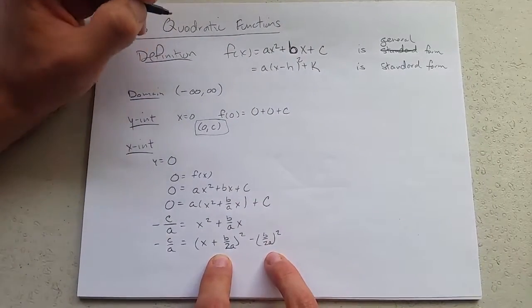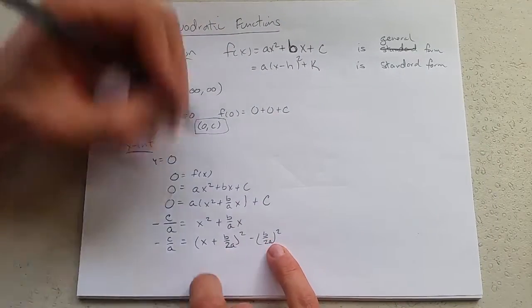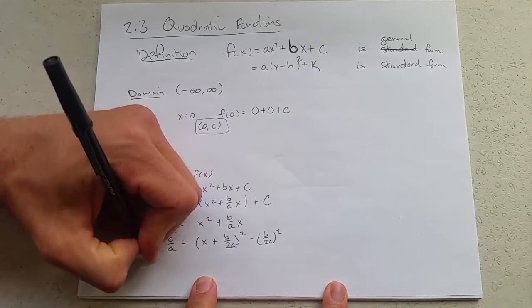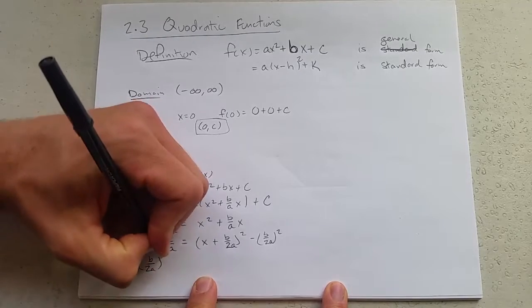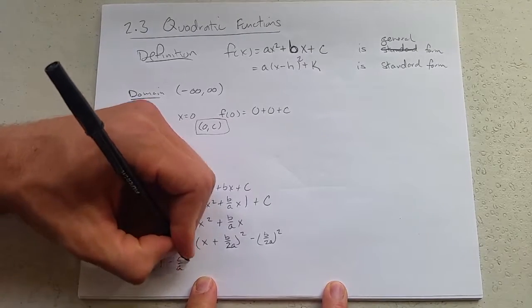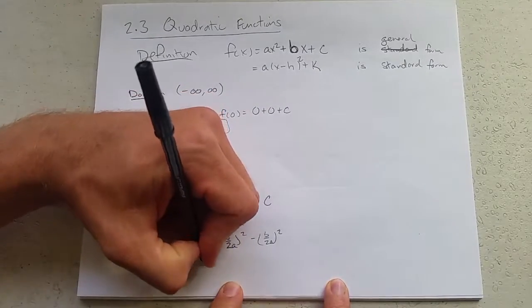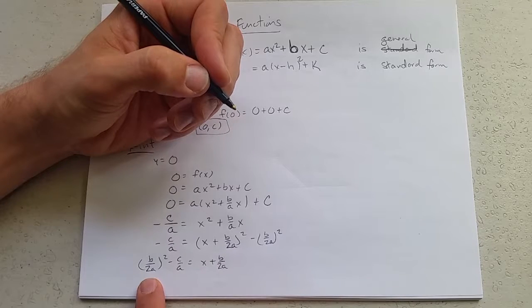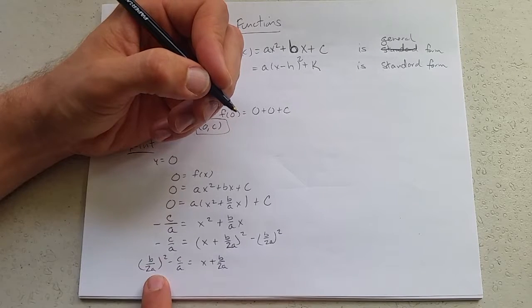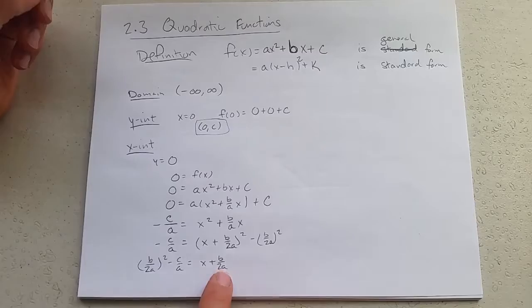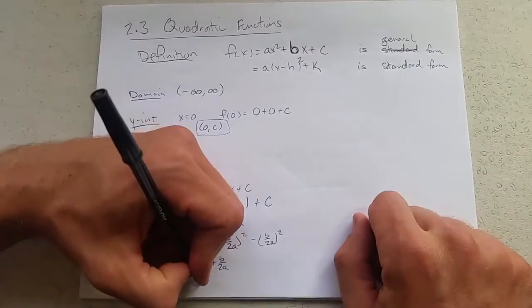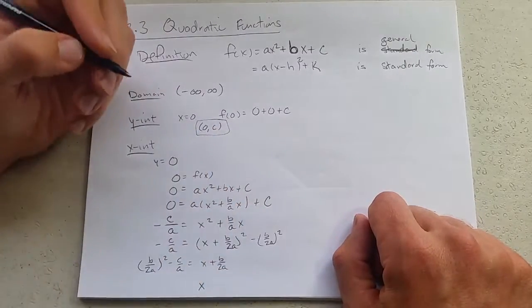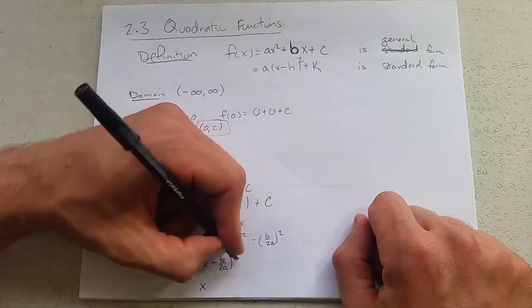b over 2a, and solving for x, we're going to add this to both sides. (b over 2a) squared minus c over a equals (x plus b over 2a). We could FOIL this out and then we'll be subtracting, and it's still squared.